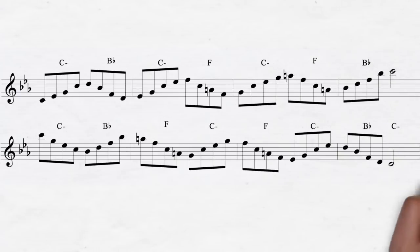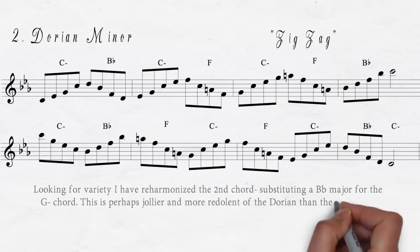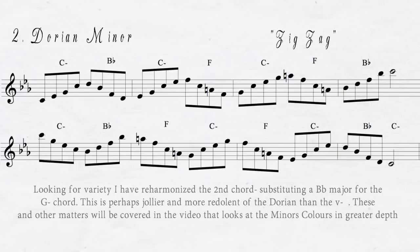Number two is on the Dorian minor. I call this the zigzag. It's like snakes and ladders. Up one, and then down the next. Quite happy, that sound after the natural minor, wouldn't you agree?